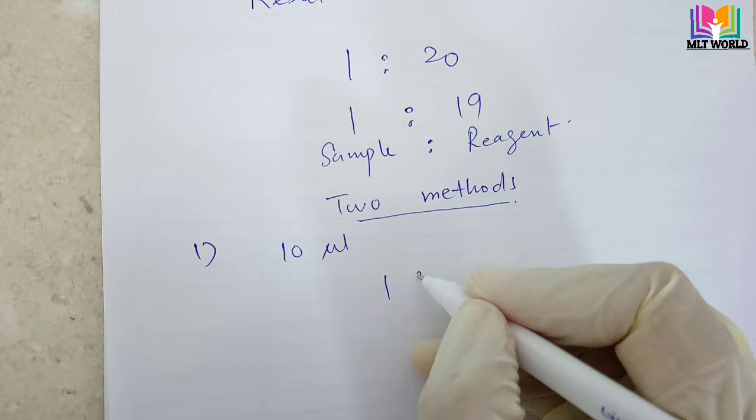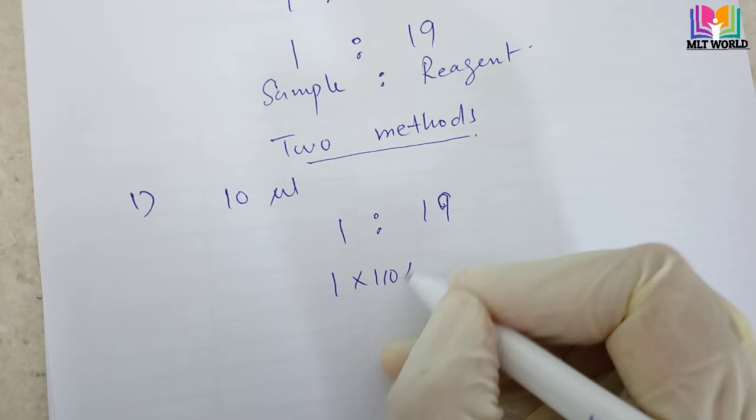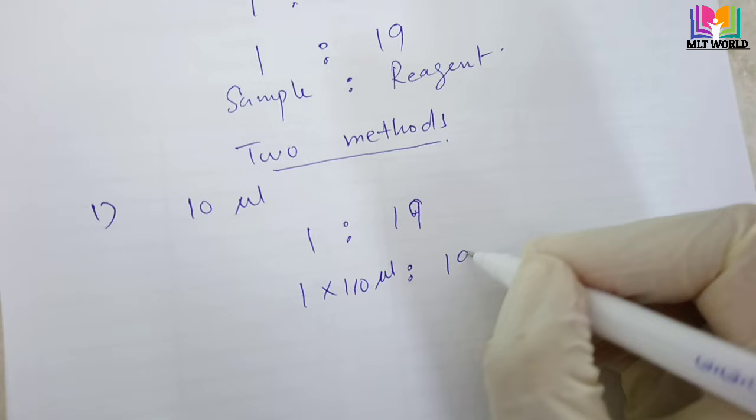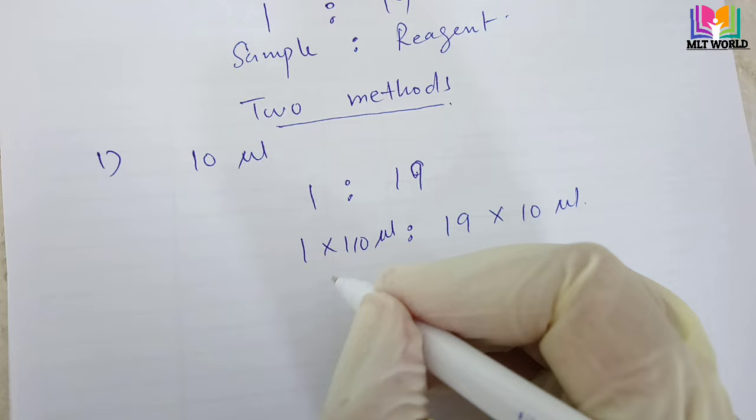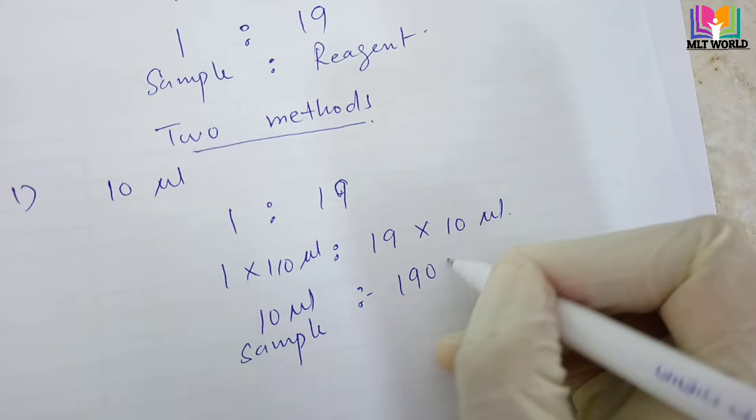First, write how many parts we need — one part sample and 19 parts reagent. Now multiply each part by 10 microliters. We get 1 x 10 microliters, meaning we need 10 microliters of sample, and 19 x 10 means we need 190 microliters of reagent.